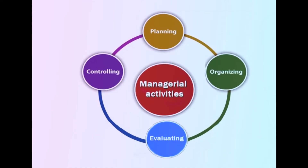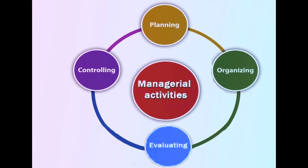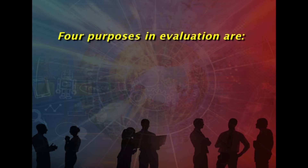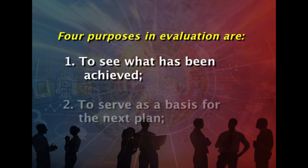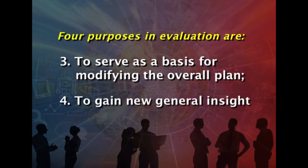The effectiveness and efficiency of management requires analysis, honesty, and objectivity, and a sound basis of judgment. The managerial activities of planning, organizing, controlling, and evaluating usually flow in sequence and form a cycle — from planning to evaluating and back to planning. There are four purposes of evaluation: to see what has been achieved, to serve as a basis for the next plan, to serve as a basis for modifying the overall plan, and to gain new general insight.